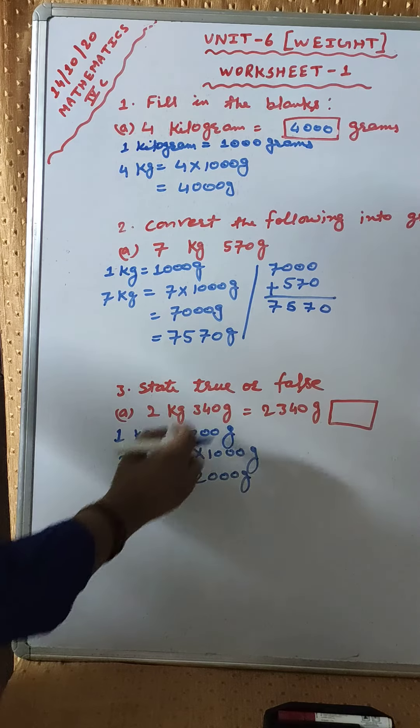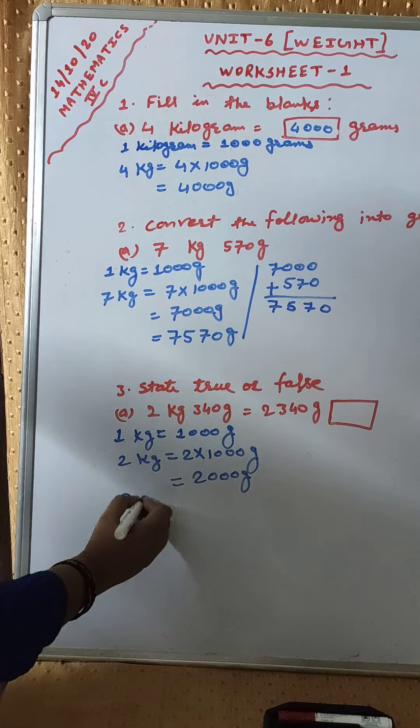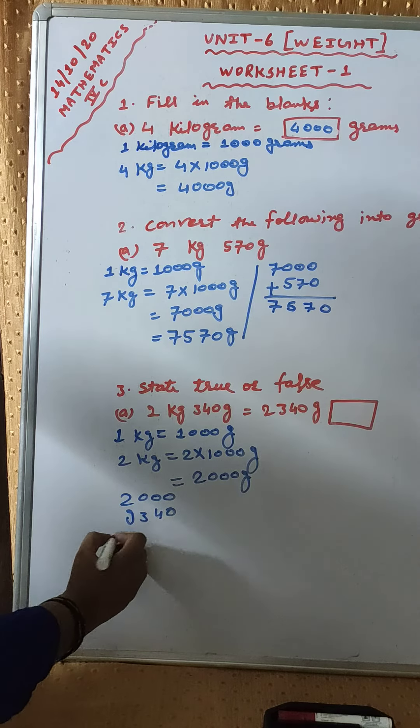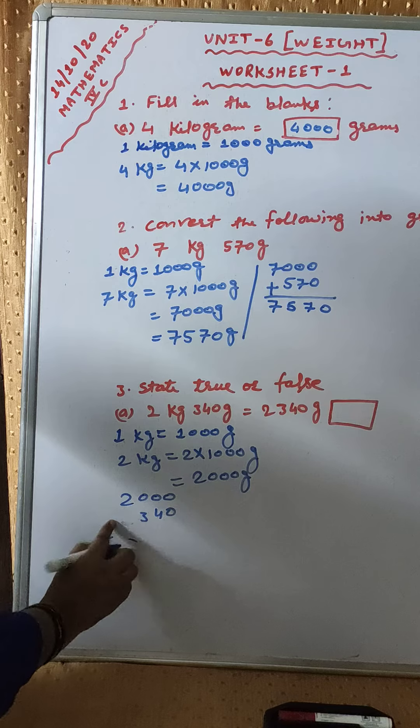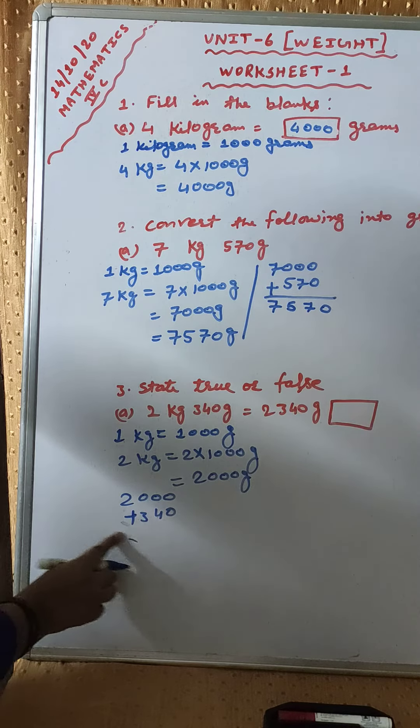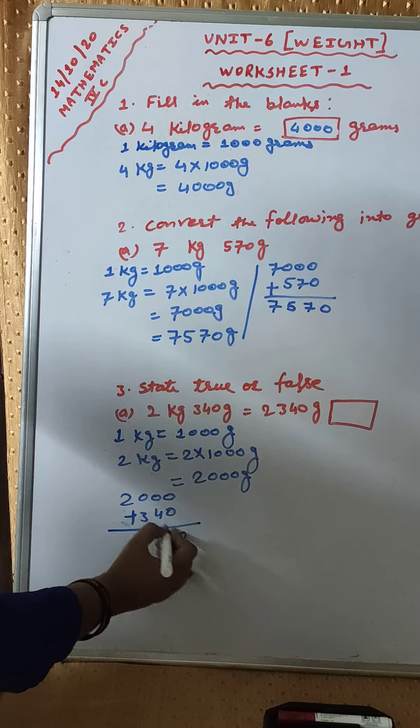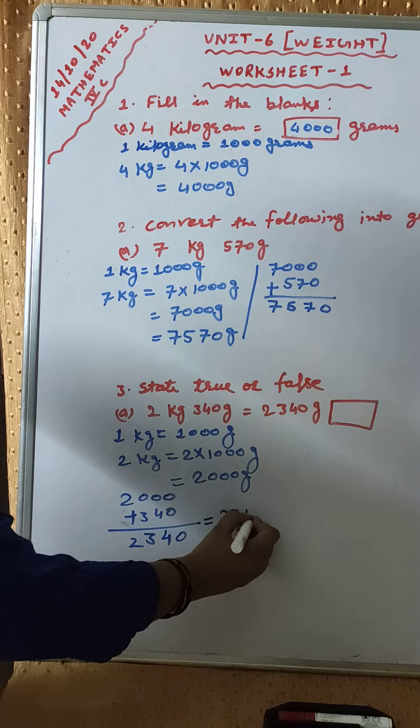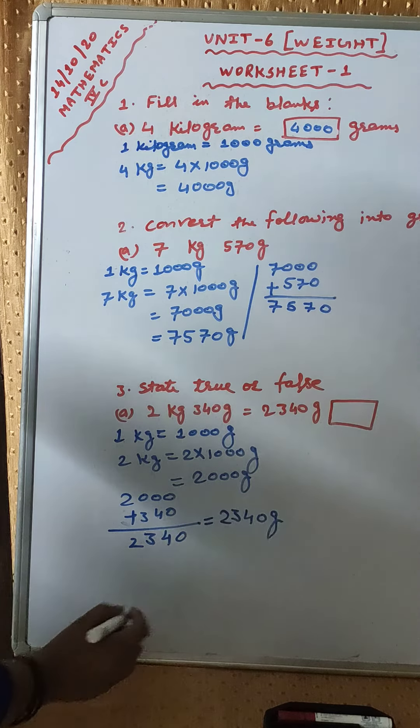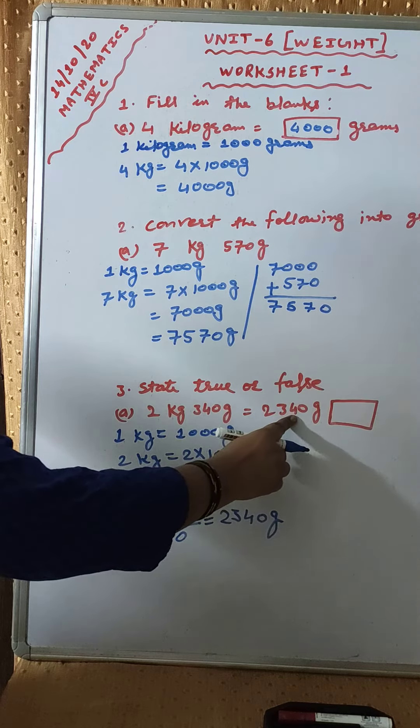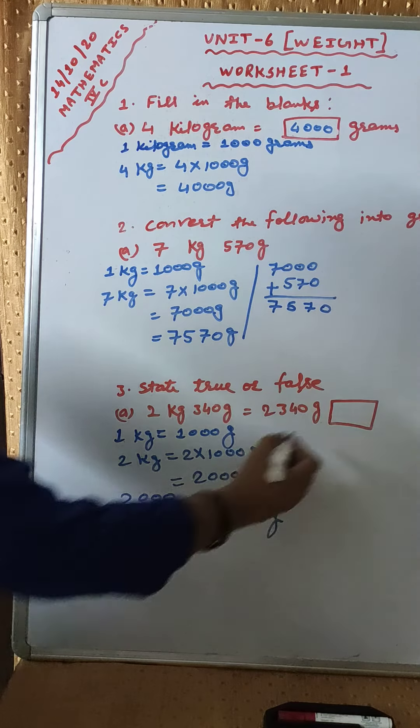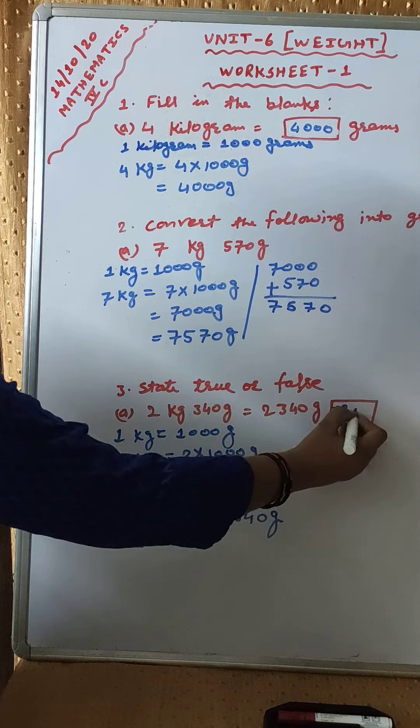Now we will add 2000 plus 340 grams. 2000 plus 340. 0 plus 0, 0. 0 plus 4, 4. 0 plus 3, 3. And here 2. That will be 2340 grams. 2,340 grams. Both answers are equal. So we will write here true.